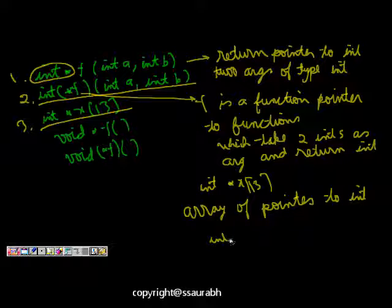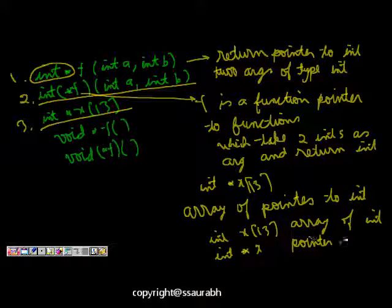So if this declaration means that we have array of pointer to int type. So why is it so? Because we know that int x 13 would be array of integers. So this is not int and int star x is pointer to int x.